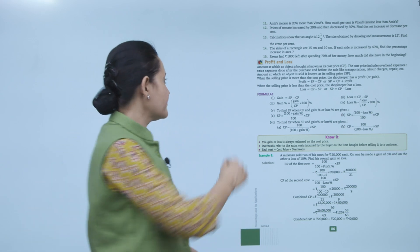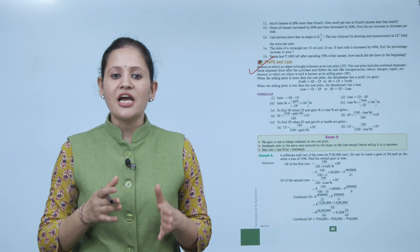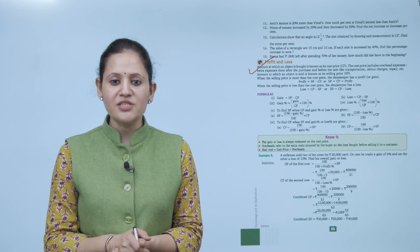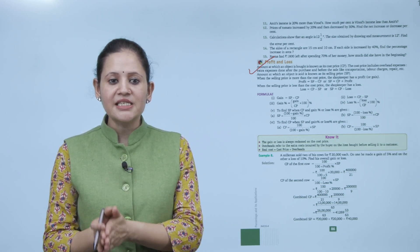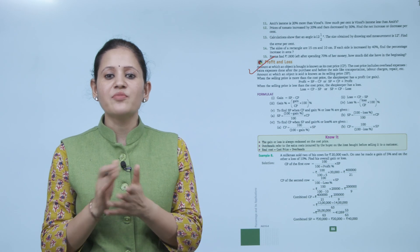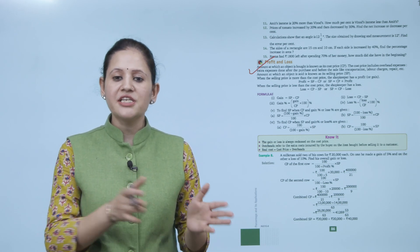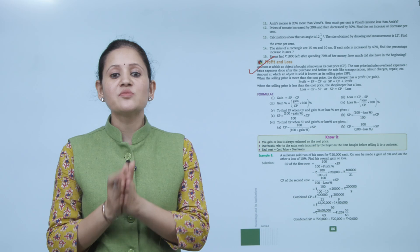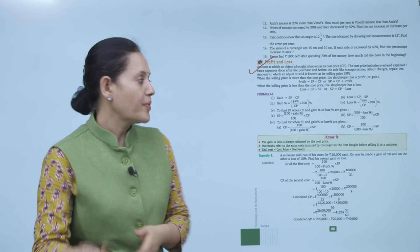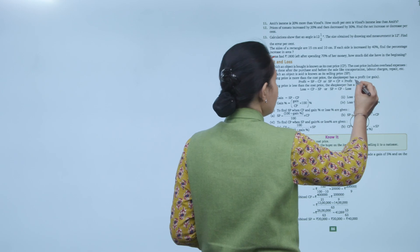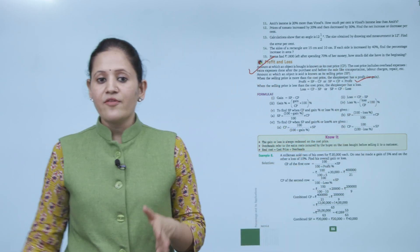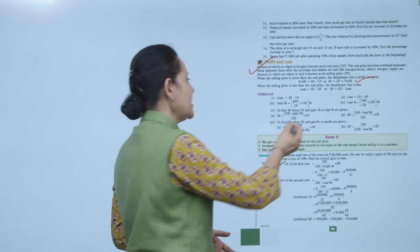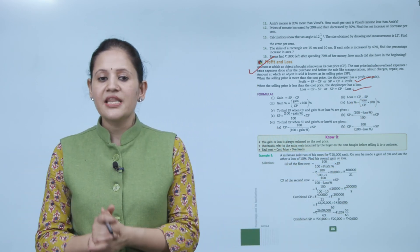Next is profit and loss. The amount at which an object is bought is known as cost price (CP). CP includes overhead expenses such as transportation, labor charges, and repair. The amount at which an object is sold is known as selling price (SP). When SP > CP, there is profit: Profit = SP − CP. When SP < CP, there is loss: Loss = CP − SP.